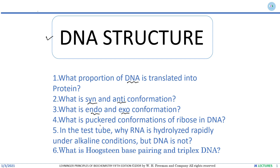What is puckering and what are the puckered conformations of ribose in DNA? There is also an experimental question: why is RNA hydrolyzed rapidly under alkaline conditions but DNA is not? The sixth question is about Hoogsteen base pairing — what do you mean by Hoogsteen base pairing, and what is the triplex form of DNA?